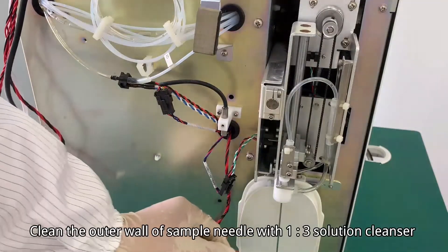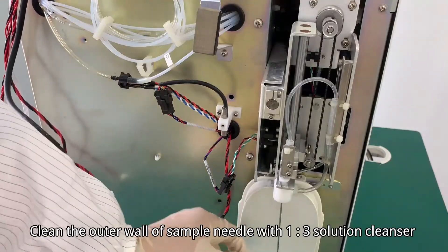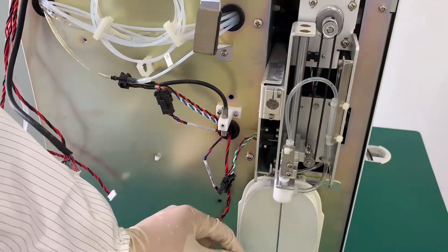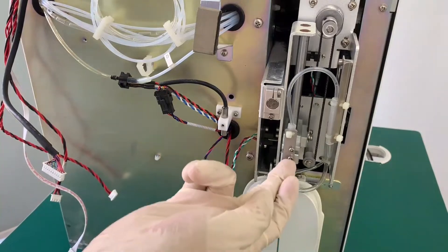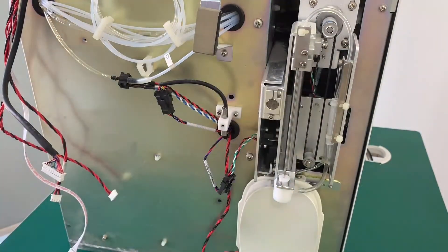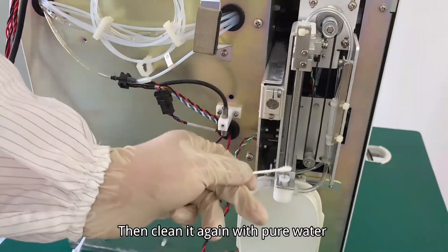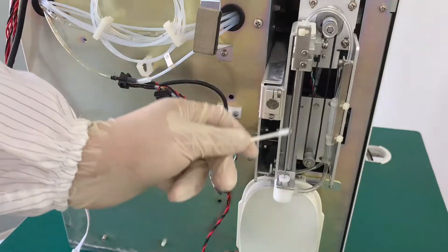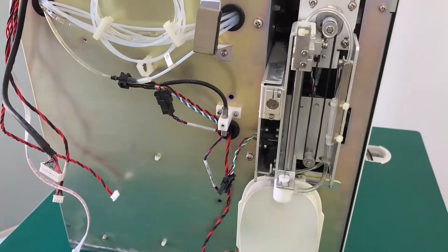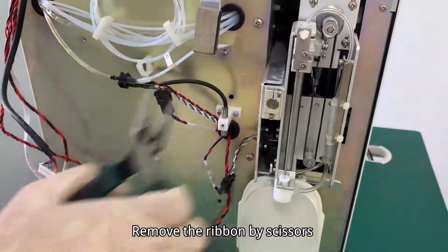Clean the outer wall of the sample needle with 1-2-3 solution cleanser. Then clean it again with pure water. Remove the ribbon by scissors.